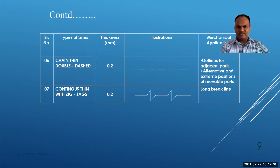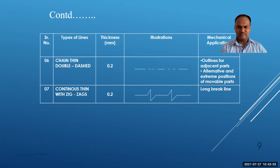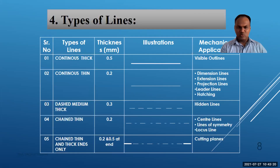A chain thin double dash line has 0.2 mm thickness and represents outlines for adjacent parts and alternative or extreme positions of movable parts — important in mechanical engineering. A continuous thin line with zigzag represents a long break line and also has 0.2 mm thickness. It is important to remember that only the visible outline uses continuous thick line at 0.5 mm; everywhere else, 0.2 or 0.3 mm thickness is used.